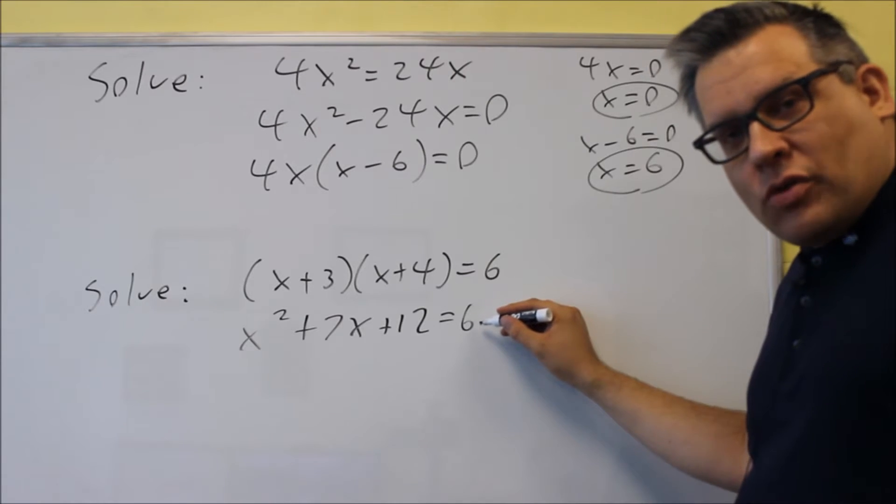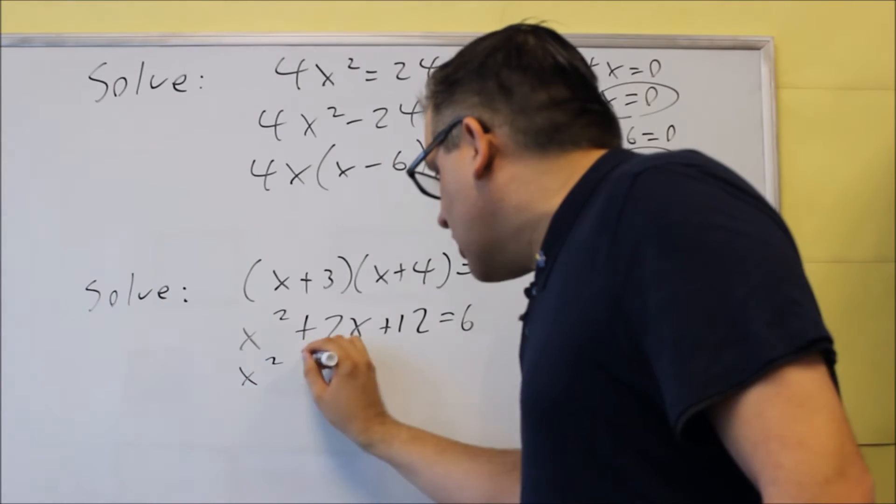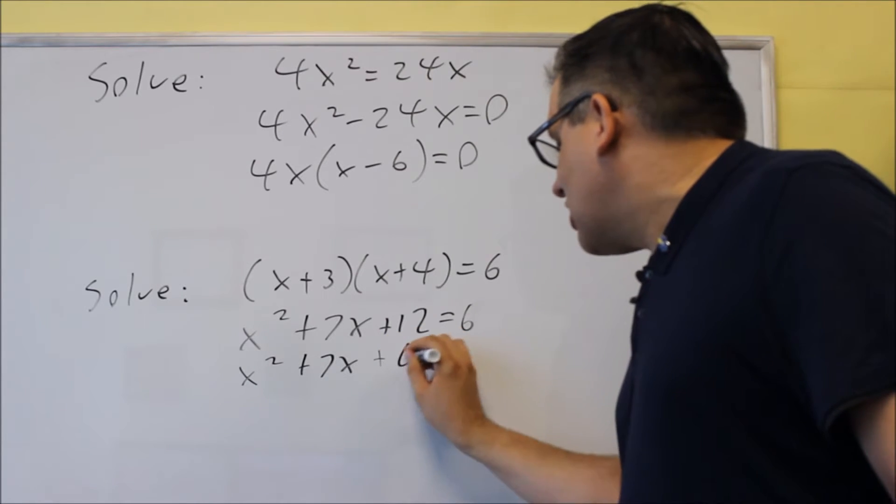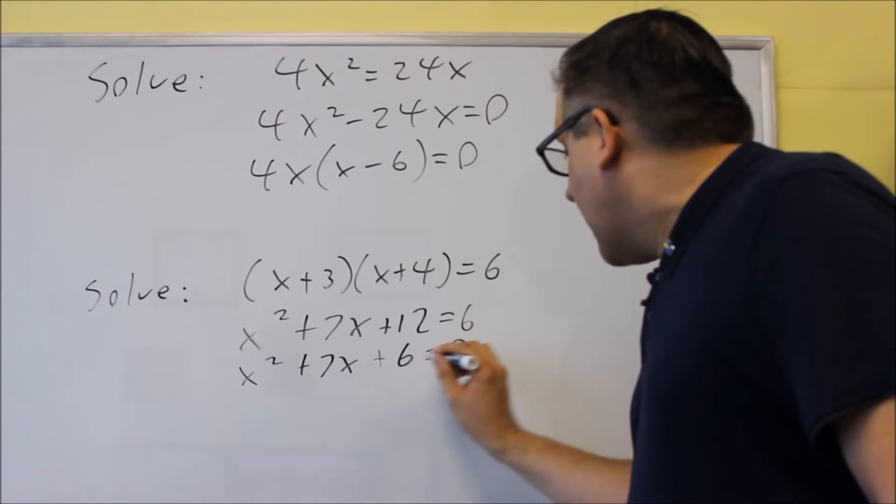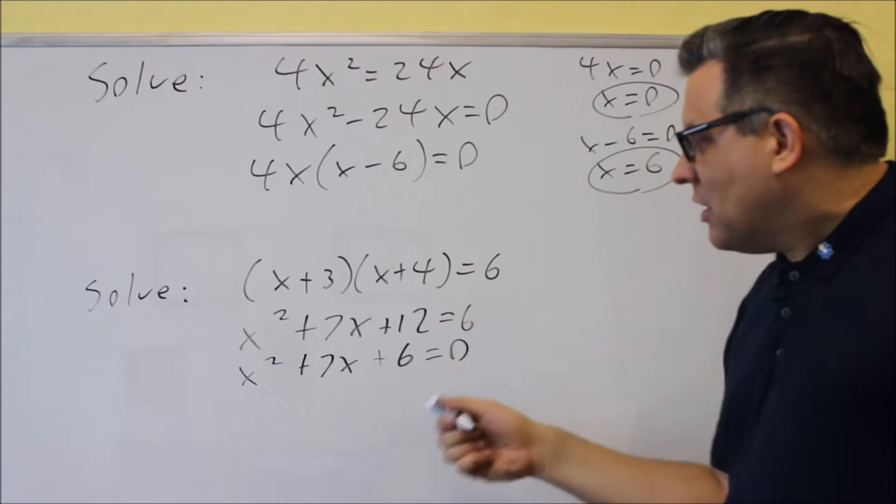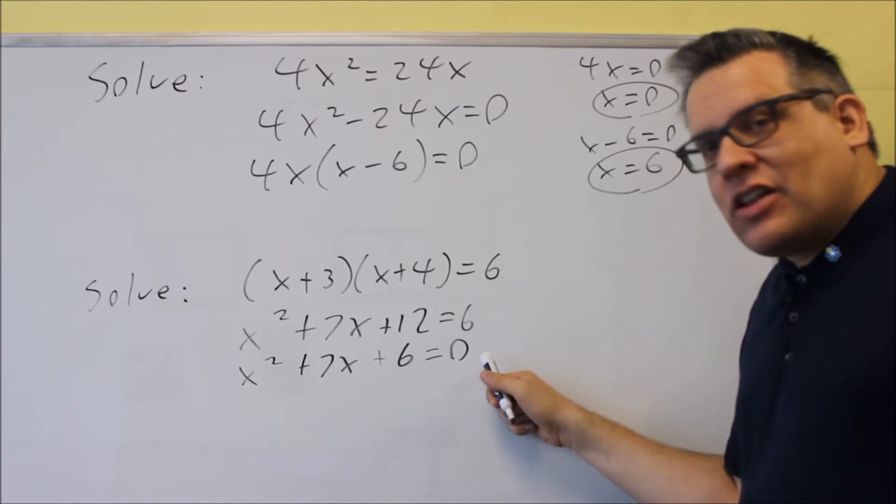Okay, and now we're going to subtract six from both sides, and we're going to get it equal to zero. So we're going to get x squared plus seven x plus six, because we subtract six from both sides, and now we have it equal to zero. So we multiply this out first, then subtract the six, and now that it's equal to zero, we can factor it.